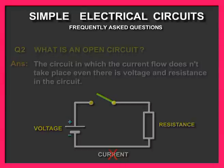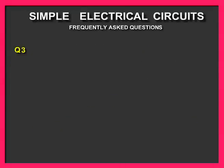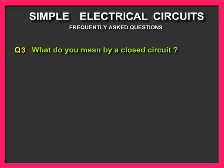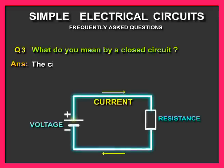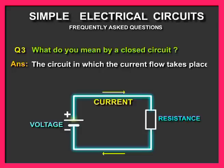Question number three: What do you mean by a closed circuit? Answer: The circuit in which the current flow takes place safely is called a closed circuit.